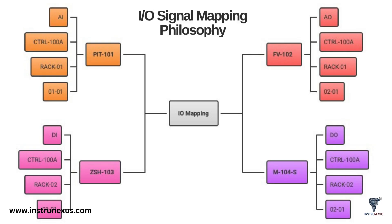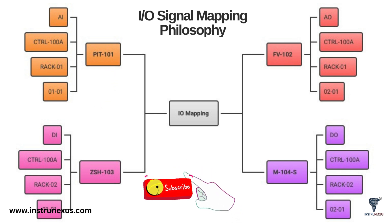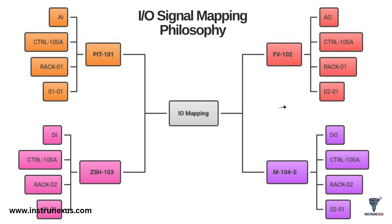Let's look at a practical example of an IO List to see how it all comes together. This table shows four different tags mapped to a single controller. First, PIT-101, a pressure transmitter – its IO type is AI (analog input). This signal is wired to controller 100A, RAC01, channel 1 on slot 01. This is how the DCS reads the reactor pressure. Second, FV-102, a flow control valve – its type is AO (analog output). The DCS sends a signal from slot 02 in that same RAC to tell this valve how far to open or close.